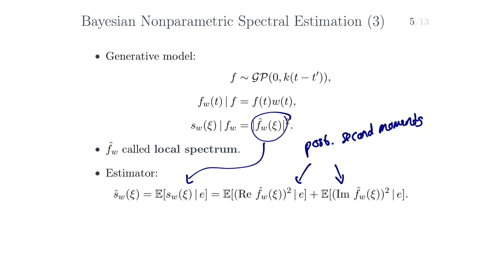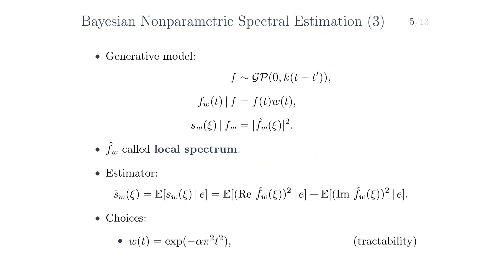These posterior second moments just follow from the usual rules of conditioning GPs on observations, if we can compute the cross-correlation between F̂_W — the real part thereof and the imaginary part thereof — with the data, and if we can compute this kernel. And this is the model introduced by Filipe Tobar in his paper, called Bayesian non-parametric spectral estimation, abbreviated BNSE. For tractability, we choose the window to be an exponential function. And the kernel of the GP over the underlying signal we let it either be a spectral mixture kernel for flexibility, or in simple cases just an EQ kernel. We'll see later how other kernels can be used as well.